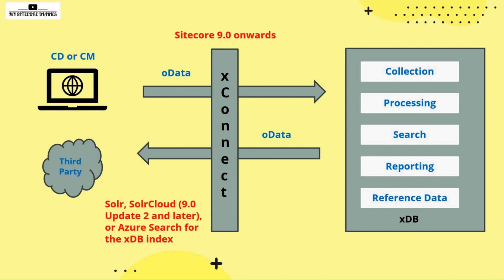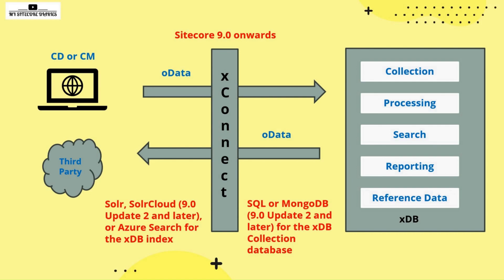At the backend, Solr or Solr Cloud can be used from Sitecore 9.0 Update 2 and later, or Azure Search for the index. For the data collection database, you can use SQL or MongoDB — MongoDB is supported from 9.0 Update 2 and later. In summary, the data flow between XDB, CM, CD and third-party applications is orchestrated through the OData Framework, while Solr, Solr Cloud, Azure Search, SQL or MongoDB form the backbone of indexing and storage.